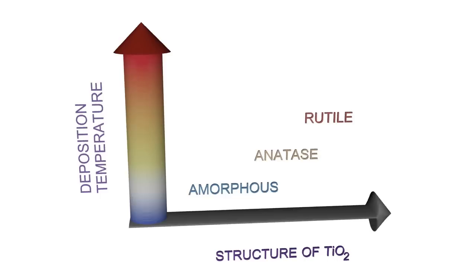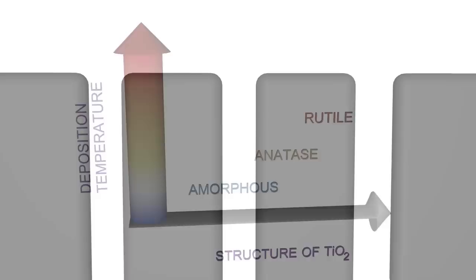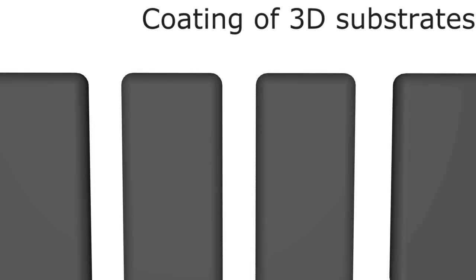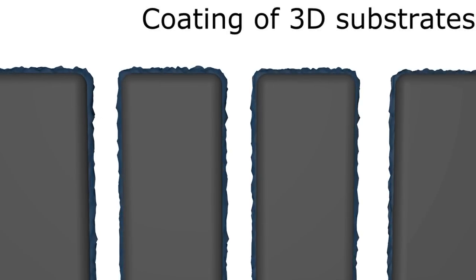The structure also depends on the substrate material and on the thickness of the deposited layer. One of the greatest benefits of ALD is the possibility of applying a uniform, continuous coating with a well-defined thickness, structure, and chemical composition on sophisticated three-dimensional substrates.